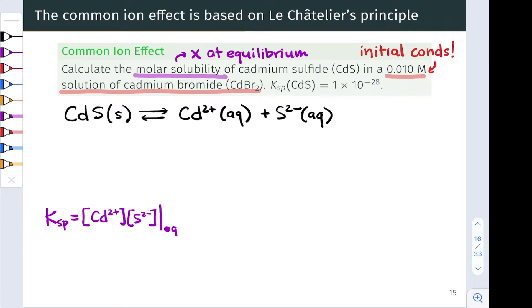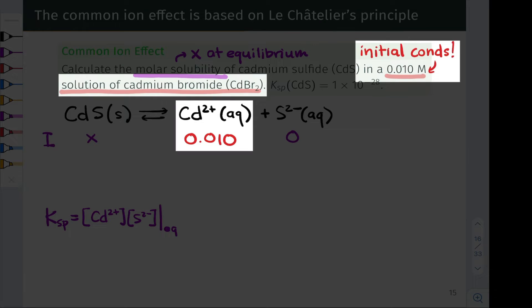We're going to think about this in ICE table terms. This 0.010 molar solution of cadmium bromide contains an initial cadmium 2+ concentration of 0.010 moles per liter.